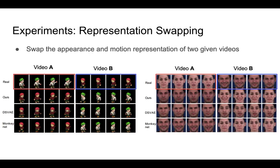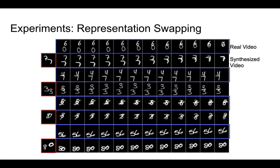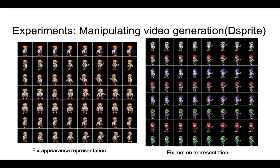We show the result of representation swapping, where given two videos, we generate new videos that have motion from one video and appearance from another. We can also fix the appearance representation to generate the same character performing different motions.